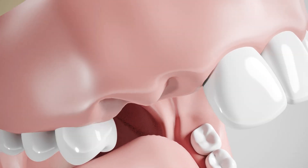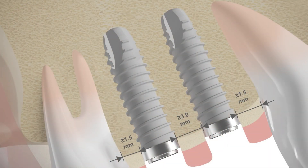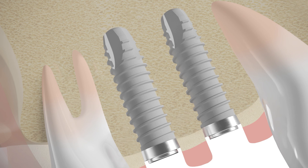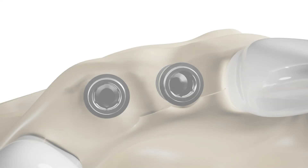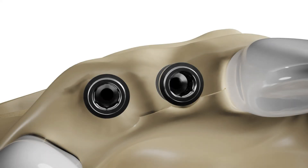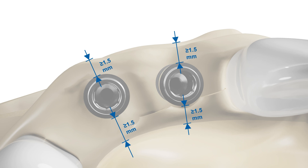While planning, it should be considered that the implant shoulder at bone level needs to be positioned at least 1.5 millimeters from the adjacent natural tooth root. The minimum distance between two implants should be 3 millimeters at bone level. In addition, a vestibular and oral bone lamella of at least 1.5 millimeters should be present around the endosseous collar region of the implant to ensure sufficient blood supply to the peri-implant bone.